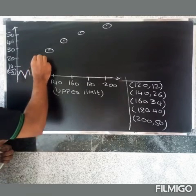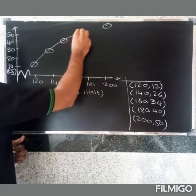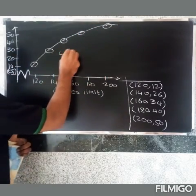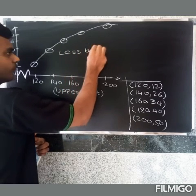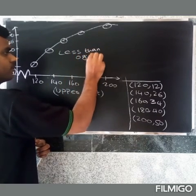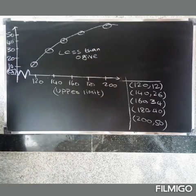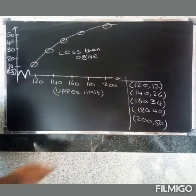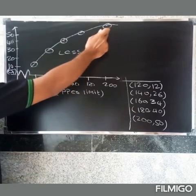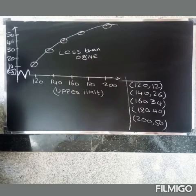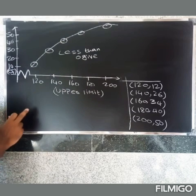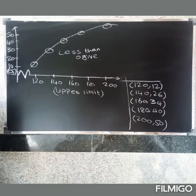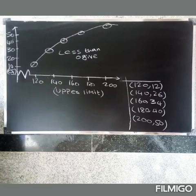For the less than ogive, the curve is increasing. For the more than ogive, the curve is decreasing. When both less than and more than ogive are drawn together, they intersect at a point. That intersection point gives us the median.